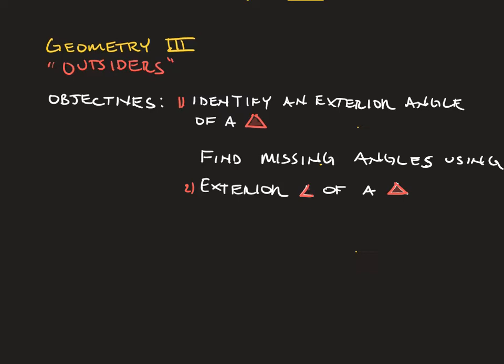The objectives in this lesson are to first see what an exterior angle of a triangle looks like and be able to find it, and also to find missing angles using the exterior angle of a triangle.